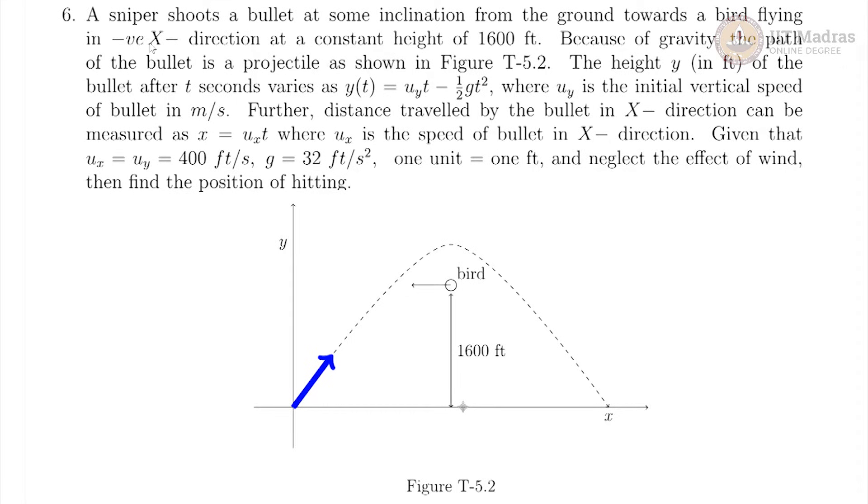In our sixth question, there is a sniper who shoots a bullet at some inclination from the ground towards a bird flying in the negative x direction. The bird is flying in the negative x direction at a constant height of 1600 feet.